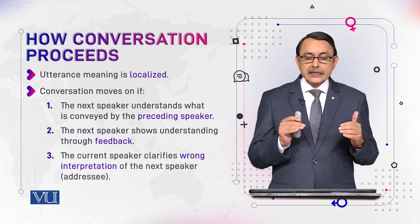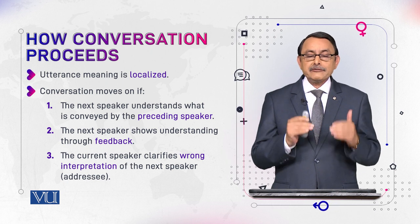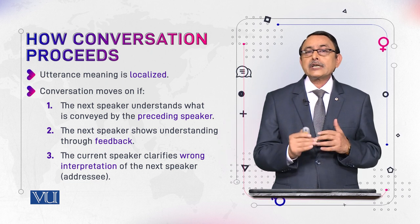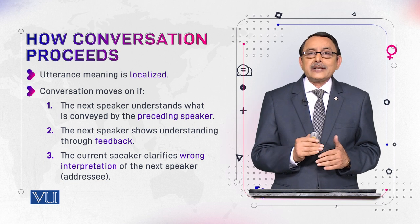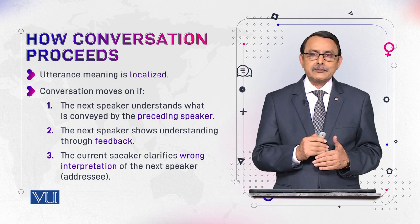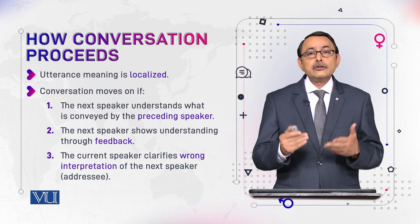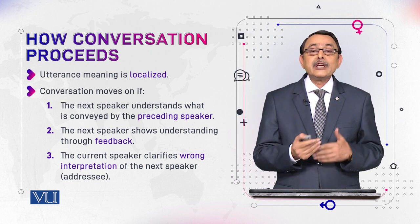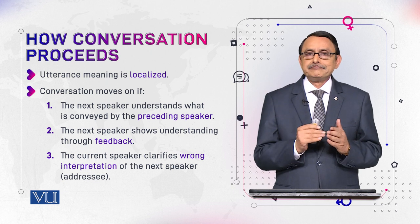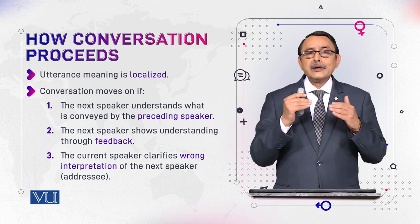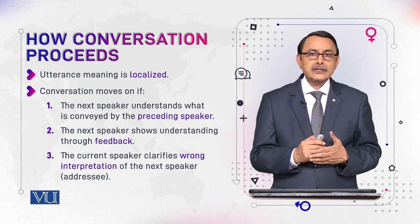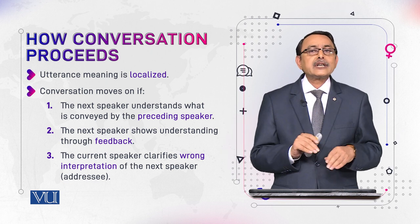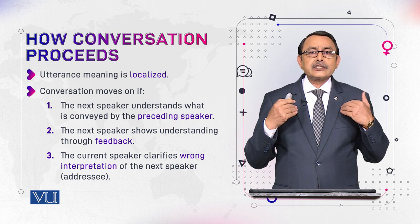The third thing is that the speaker clarifies wrong interpretations of the next speaker. There is space for clarification in conversation. What you are talking about may be something new for the listener — your language may be difficult, your topic may be difficult, or you may belong to some foreign culture. All these things make something difficult to understand. So you allow the listener to ask questions for clarification. If you allow this, your conversation will move on.